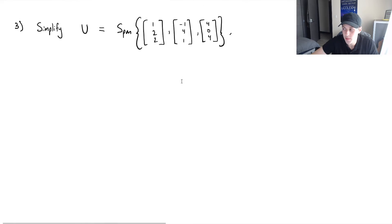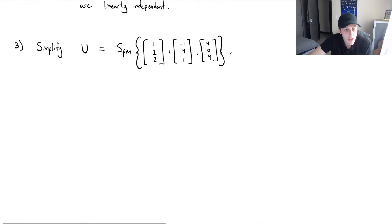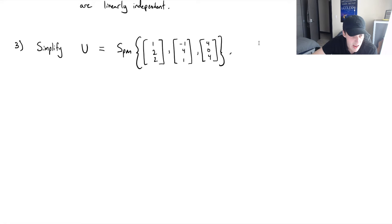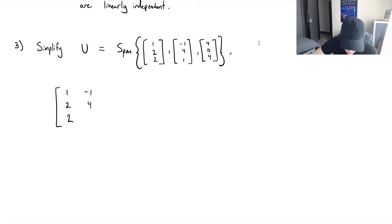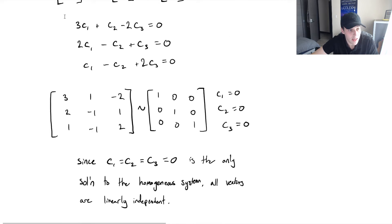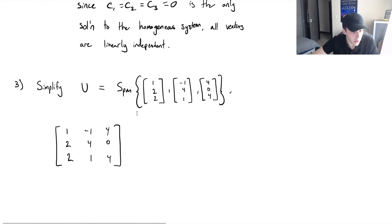Let's do this last example — simplify this span. We'll do the same thing as before. If it's not alarmingly obvious, we set up a matrix for the homogeneous system and solve for the constants to see if they're all zero or not. If not, the vectors are not linearly independent. As a shortcut, just put the vectors as the columns of your matrix.